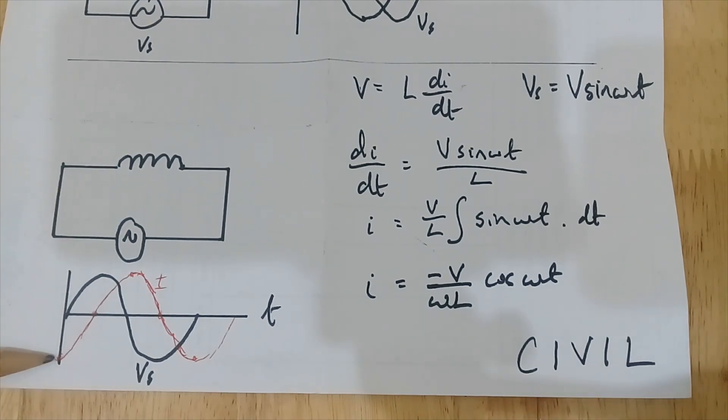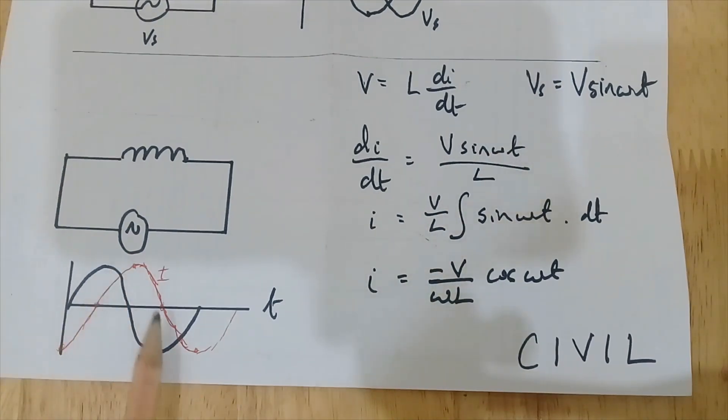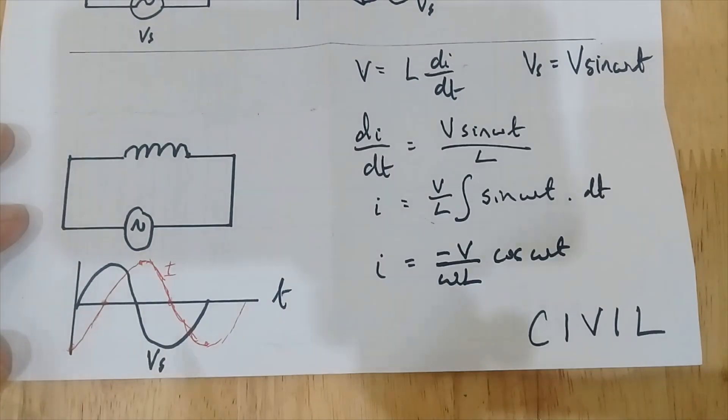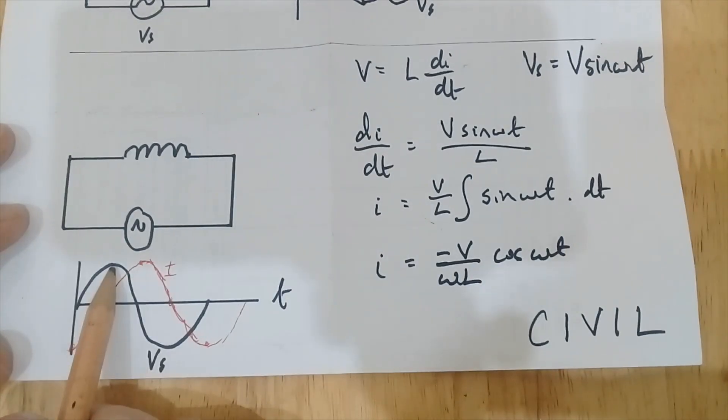You should know all this from your trig classes. Minus cos is just the inverse of cosine.